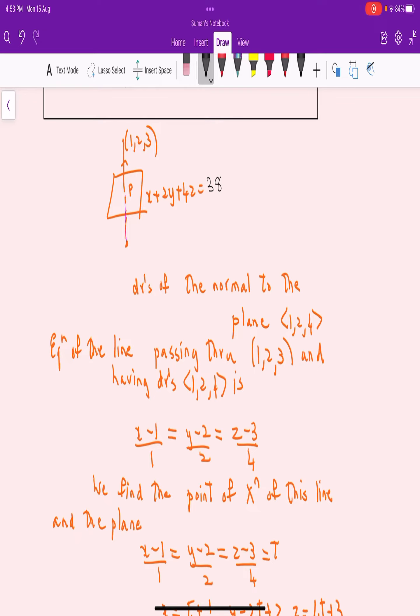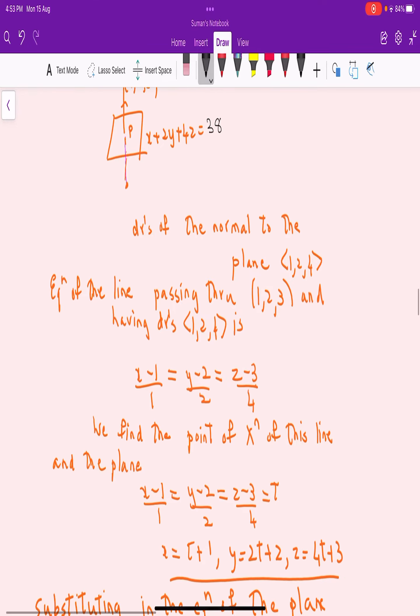Now we find the point of intersection of this line and the plane. Let (x-1)/1 = (y-2)/2 = (z-3)/4 = t.